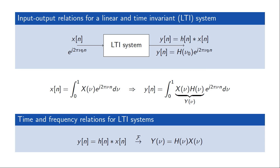This gives us two different ways of looking at an LTI system. In the time domain, the output is given by the impulse response convolved with the input. Equivalently, the Fourier transform of the output equals the frequency response of the system multiplied by the Fourier transform of the input. This frequency-domain view is typically much more illustrative for understanding the properties of the system, and it is one of the main reasons for introducing the discrete time Fourier transform.